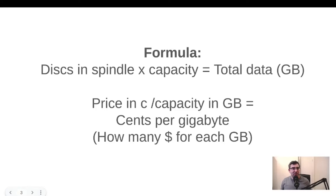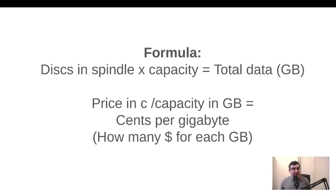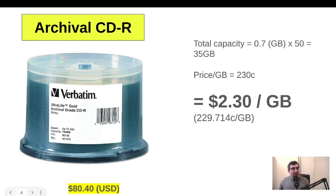To show you the math I used: my formula was to multiply the number of discs in the spindle by the capacity in gigabytes to get total data in gigabytes. Then to calculate cost per gigabyte, I took the price in cents and divided by the total capacity in gigabytes, yielding a figure of cents per gigabyte — in other words, how much money you're paying for each gig of data.